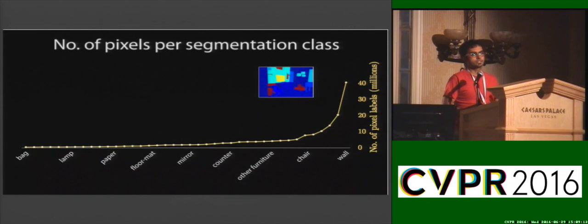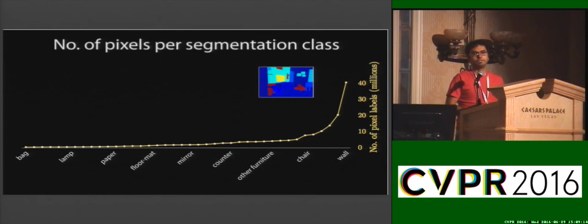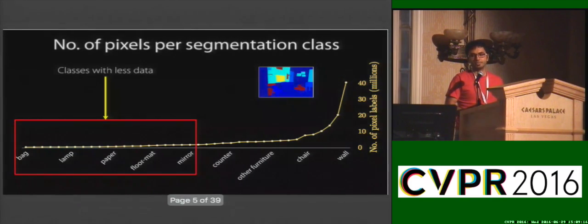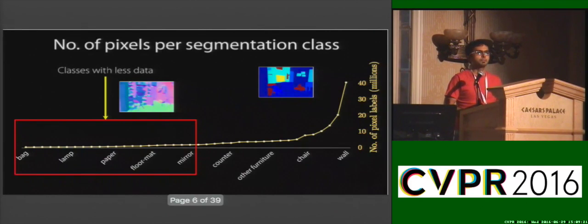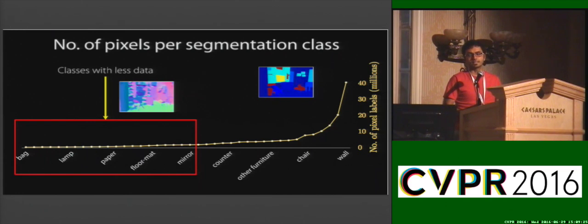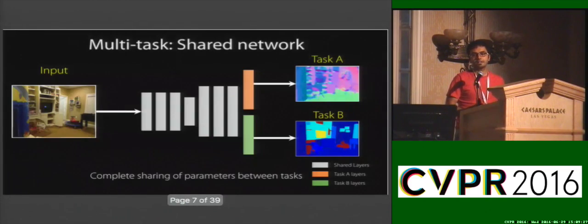So now let's look at the data distribution across these classes. We notice that the distribution is very skewed and many classes have very little data. So can we expect an alternate but free form of supervision to help improve performance across these classes?